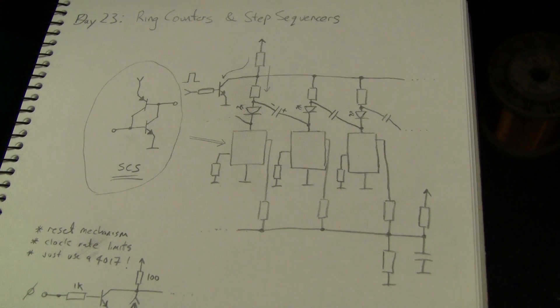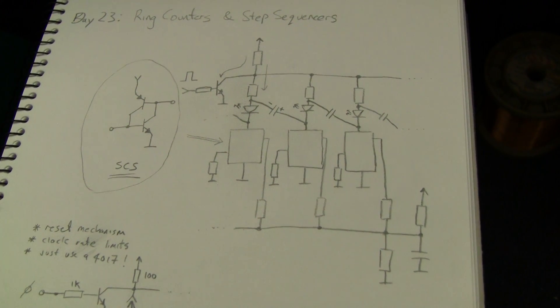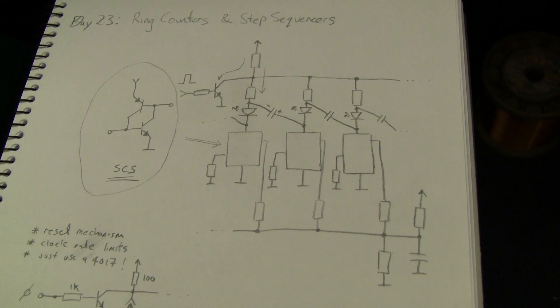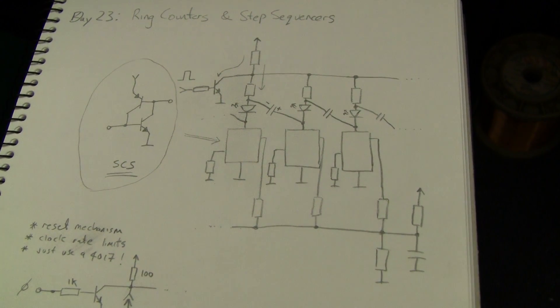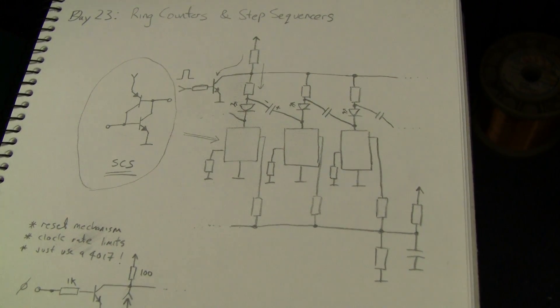Of course, you can combine it with the staircase generator, which was one of our other projects, to pre-scale, say, the mains down to pulse per second and then count that using this.